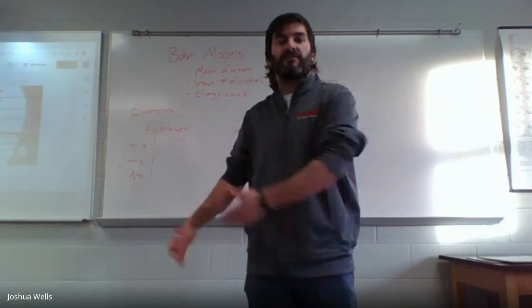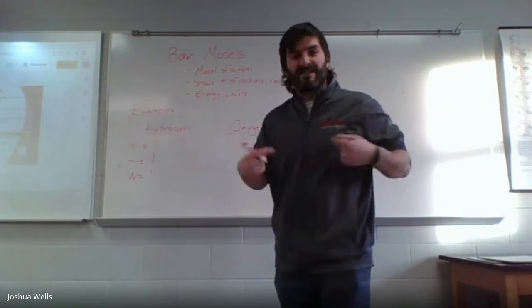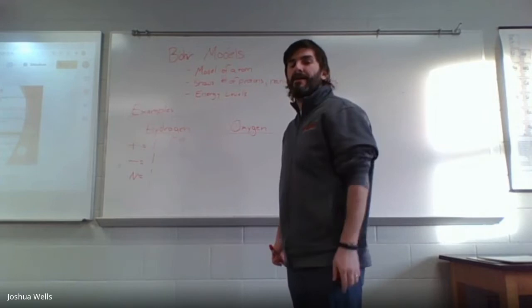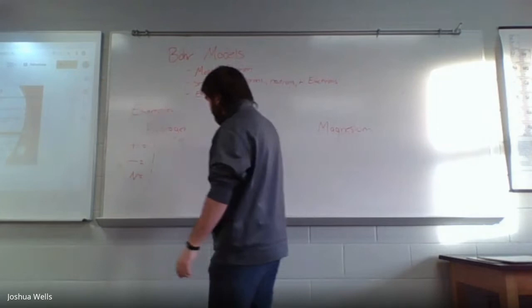That is going to be typical for all of these sample ones in physical science. In chemistry it gets a little bit more complicated, so when you get there as a sophomore or junior you'll see that change. But for right now, we're going to say that if the atomic number is one and we have one proton, then we can assume we have one electron and one neutron.